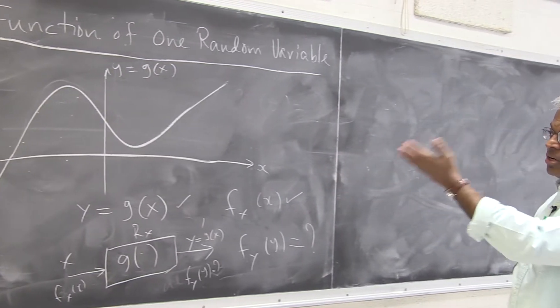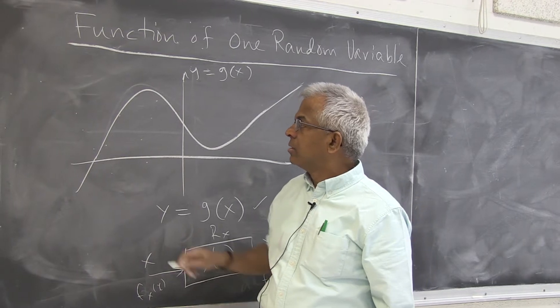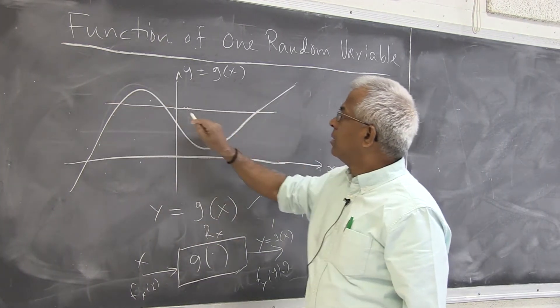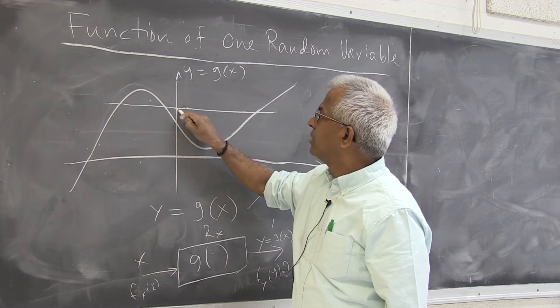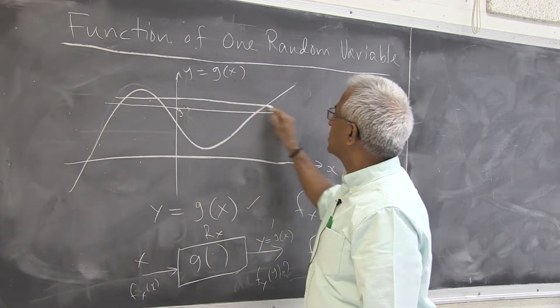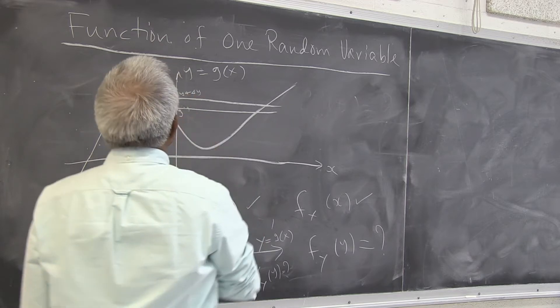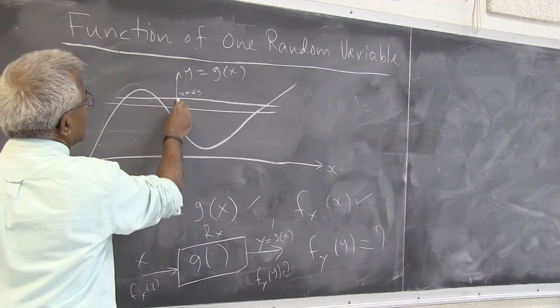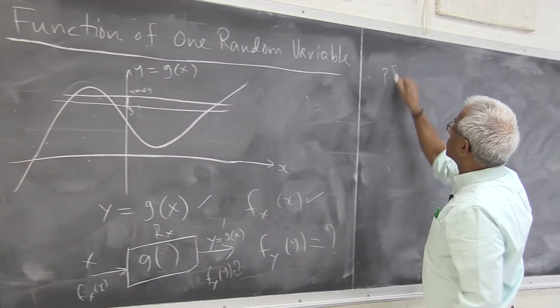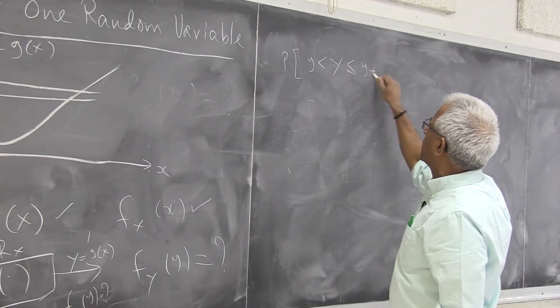So if the function is smooth and continuous like this, there is a shortcut to do this. So let's say you pick up some particular value of y. So this is y. And I make a small increment. So this is y plus delta y. So as you can see, the random variable, when it takes the value between, we can start by computing this probability. Probability that the random variable is between y and y plus delta y.